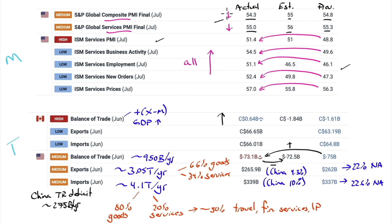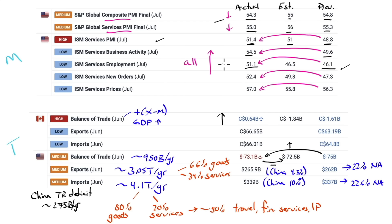Then 10 o'clock came - look at ISM services: 51.4, expectation of 51, previous reading was 48.8. That's a big jump up. Business activity from 49.6 to 54.5. Services employment - after Friday's bad job report - from 46.1 to 51.1. That's expansionary territory; the previous was contractionary. The expectation was for 46.5 to increase a bit, and boy did it increase. New orders from 47.3 to 52.4, expectation was 49.8.